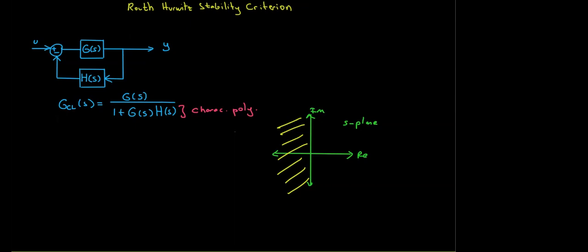For example, consider G_closed_loop(s) = 1 / [(s+1)(s+2)(s+3)]. I can place the pole locations at minus one, minus two, and minus three on the s-plane, and easily say the system is stable because they all lie in the open left half plane. What causes problems is if you have poles on the right half plane — that causes instability.